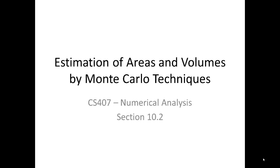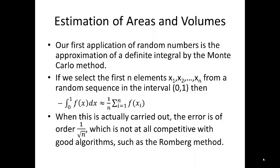CS407 Numerical Analysis Section 10.2: Estimation of Areas and Volumes by Monte Carlo Techniques. In this section we're going to work with estimation of areas and volumes. Last time we explored random numbers and how they are generated. We're now interested in applications of these, and our first application of random numbers is the approximation of a definite integral by the Monte Carlo method.